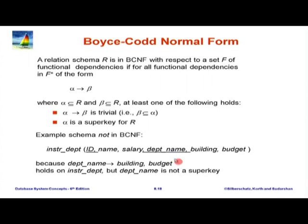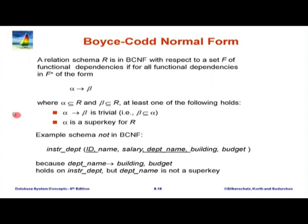As a result, the pair building-budget will also be the same. In this case we had this dependency, but department name is not a super key, because you can have two different instructors with the same department. Therefore, department name does not determine the ID of the instructor — it is not a super key. It violates this condition. At the same time, it is not trivial. Why do we want to eliminate trivial ones? Because if you take any schema, even one which is actually in good form — say, instructor name salary — we can say that name, salary determines name. It is trivial, and name is not a super key, but this really does not cause any problems.